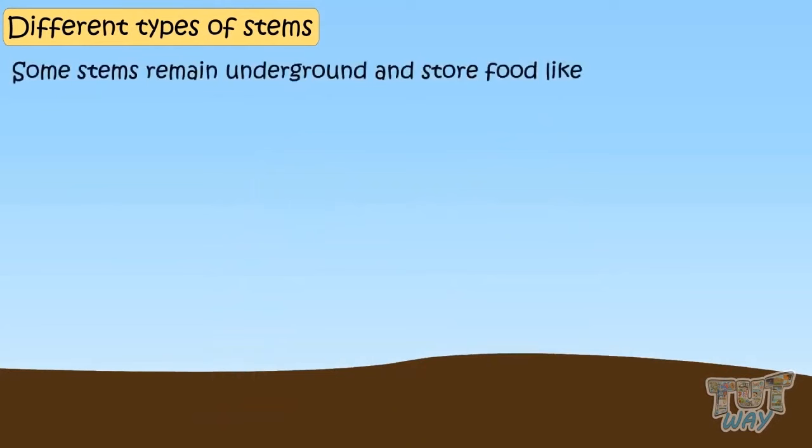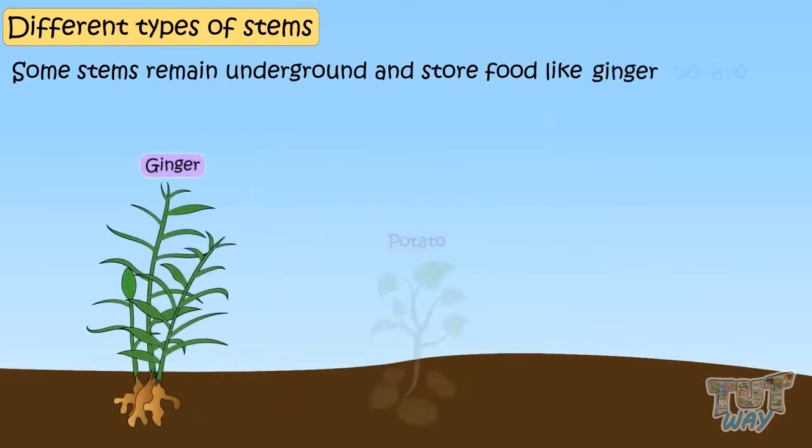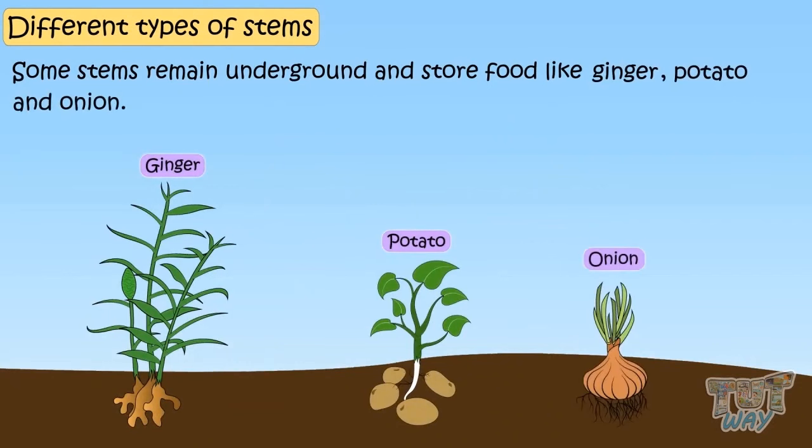Some stems remain underground and store food like ginger, potato, and onion. These are actually stems that we eat.